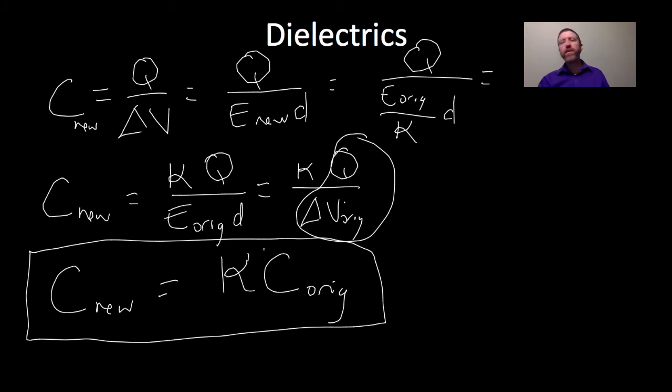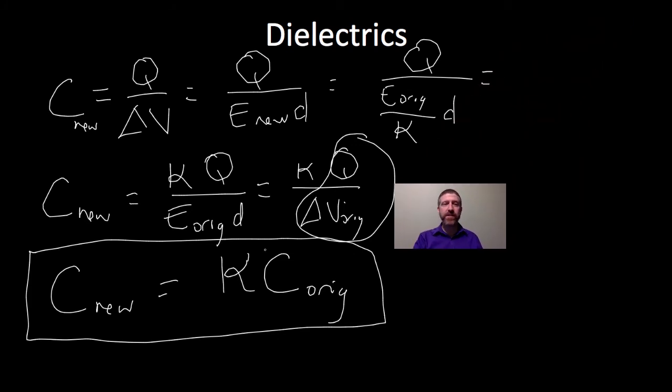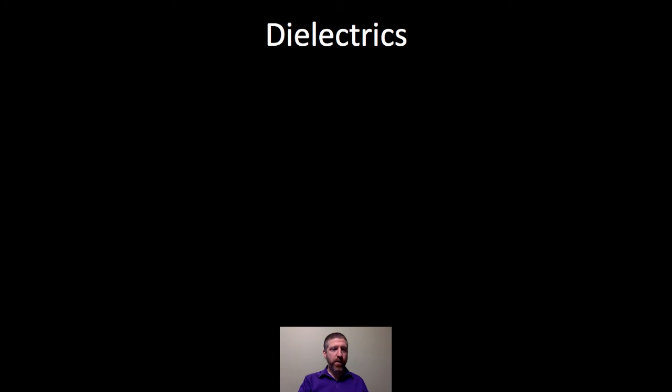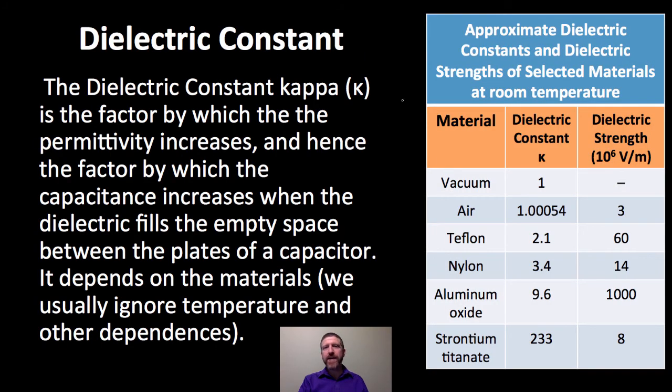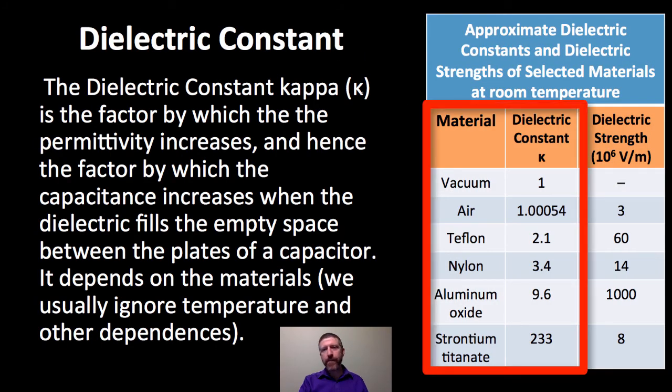This is what we said at the very beginning, how the capacitance has only to do with geometry and materials. This is where the materials kick in. So the dielectric constant kappa is the factor by which the permittivity increases. In other words, you are permitted more charge per unit of electric field. And hence the factor by which the capacitance increases when the dielectric fills the empty space between the plates.